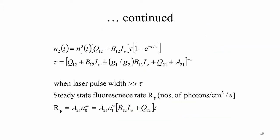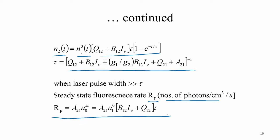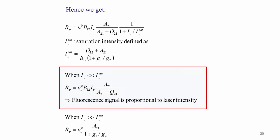We can essentially write n₂ in terms of n₁ by integrating, using a time constant. Then we can find that the steady-state fluorescence rate — that is, the number of photons emitted due to fluorescence per unit volume per unit time — is given by R_p at steady state equal to A₂₁ times n₁(0). So we have n₁(0), which is exactly what we want to measure.